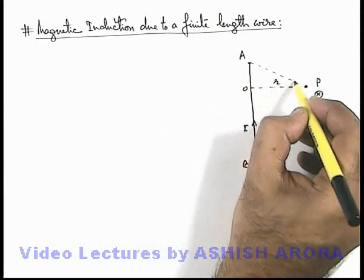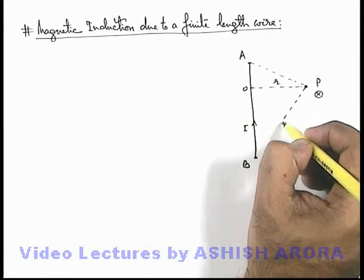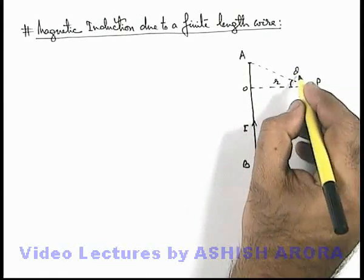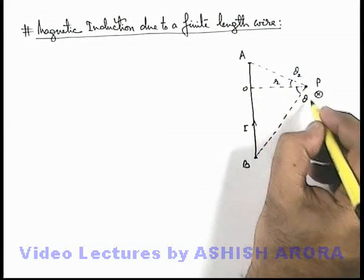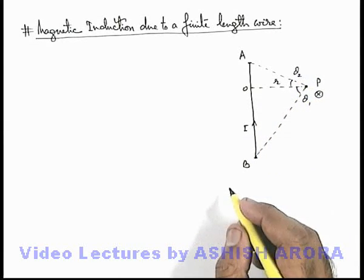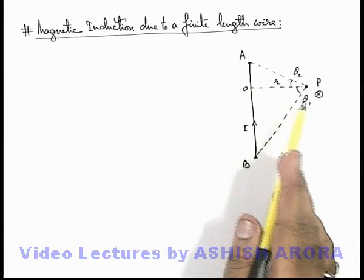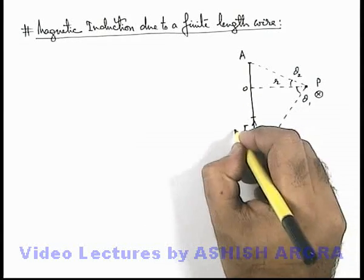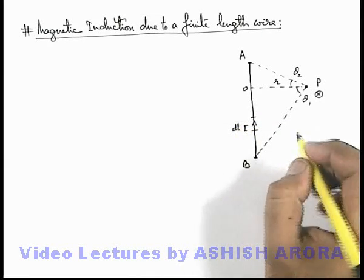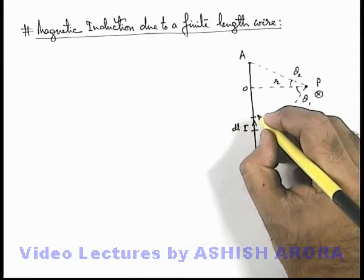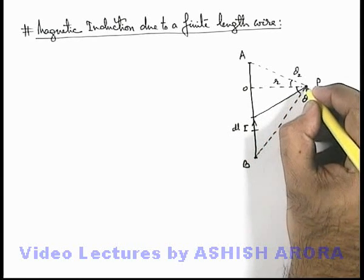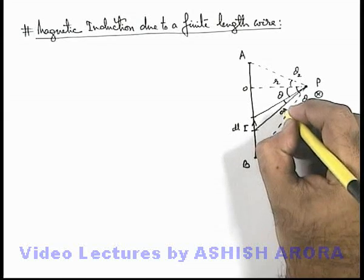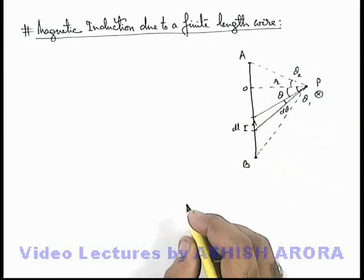Say we are also given that if point P is joined with the edges of wire A and B, these angles subtended by A and B at P are theta 2 and theta 1. Then we can find out the magnetic induction by using Biot-Savart's law, for which we consider a small element of length dL on the wire. Rather than using a Cartesian system, let's proceed in a slightly different way. Here at an angle theta from line OP, we consider an element of angular width d-theta.